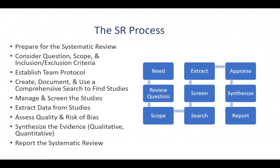Focusing specifically on systematic reviews, the process follows this flowchart. First, you will determine the need for the systematic review and prepare by gathering background information and putting together your research team. As you investigate the need for the review, you will also start to think about the review question, scope, and your criteria, and build and finalize that into the review protocol. You will then create a comprehensive literature search to find studies to be evaluated for inclusion through the screening process. Once included studies are determined, you will extract data from those studies, assess the quality or risk of bias, and then complete your evidence synthesis in the manuscript.